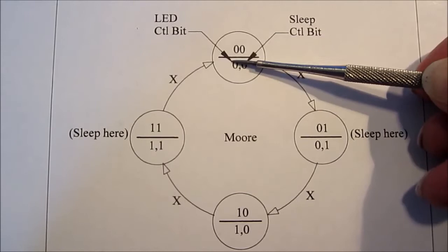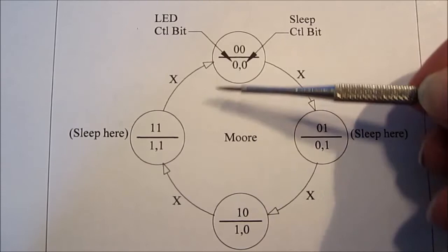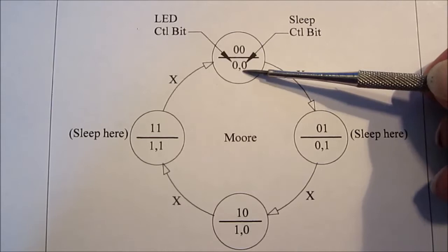Now you might ask a very reasonable question: why don't we just have two states, why don't you just have the LED off and have it delay and then have it on and have it delay and back and forth between those two?